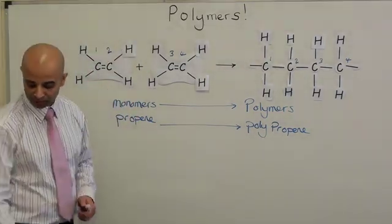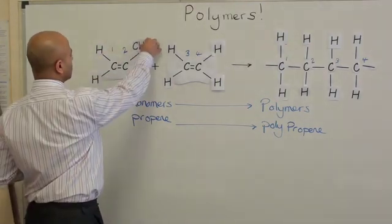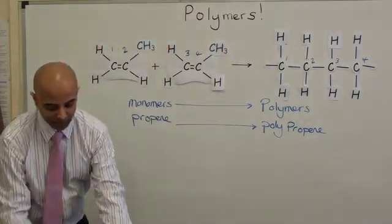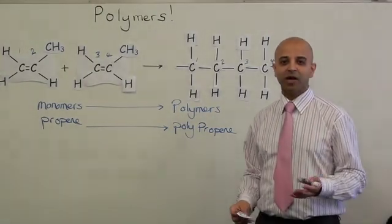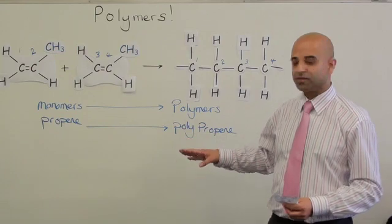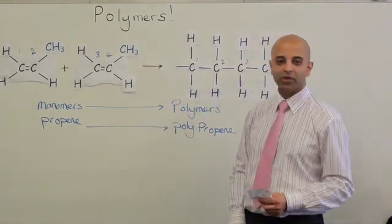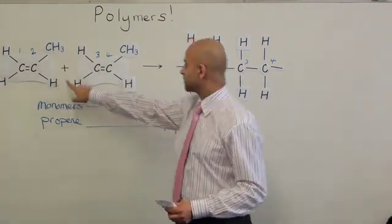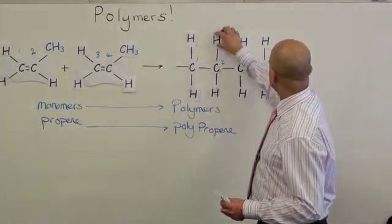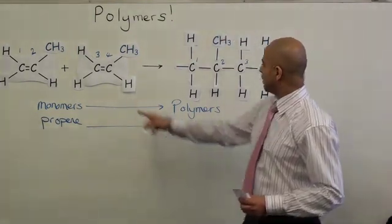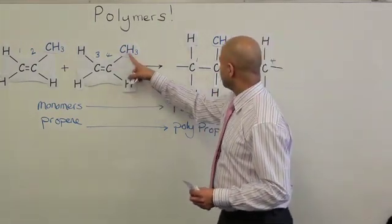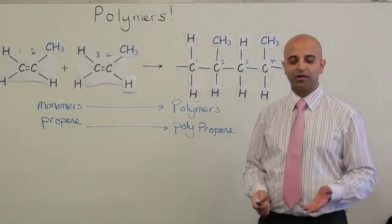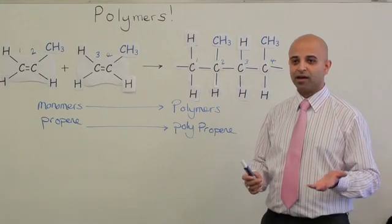We need to change the structure to make polypropene. What I'm going to do is change one of the hydrogens for a CH3 group. This is where numbering your carbons is important, because now you've got a CH3 present, not just hydrogens. Carbon 1 is still hydrogen top and bottom. Carbon 2 has a CH3 and a H at the bottom, so you go across to your polymer at carbon 2 and change that for a CH3. Carbon 3 remains the same. Carbon 4, you change for a CH3. There you have polypropene.